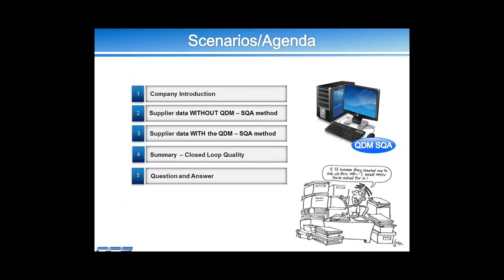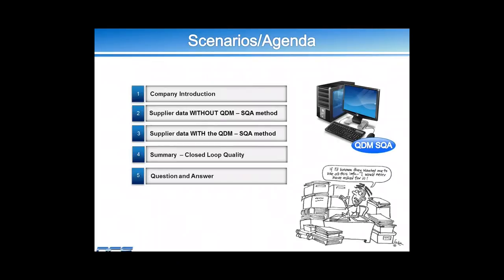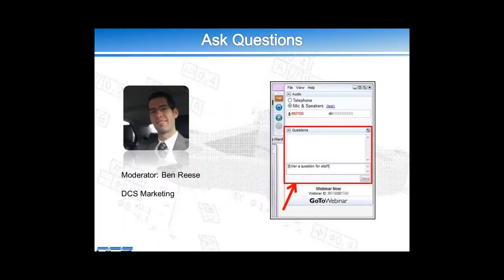Quick agenda for today: we're going to do a brief company introduction. Jamie Dutton will be doing two small use cases that are kind of fun and let you know how the SQA method can automate your supplier quality assurance. Then we'll move over and let Oliver tell us about the technical details of how the tools and the process itself work, some of the nuts and bolts. And then we have some Q&A at the end.